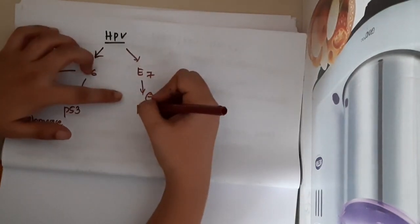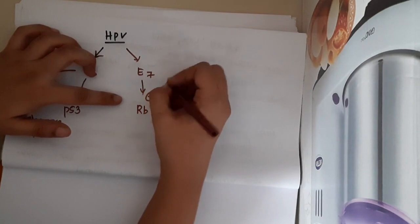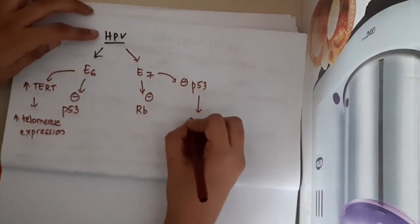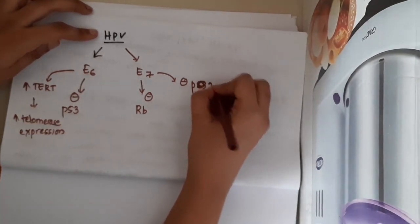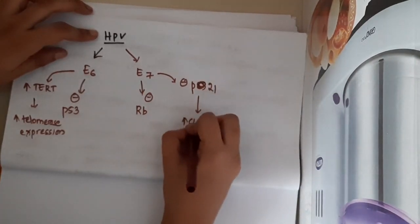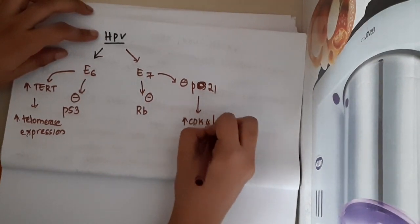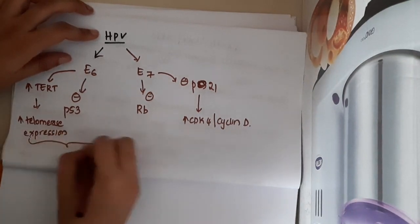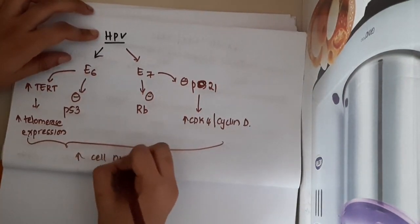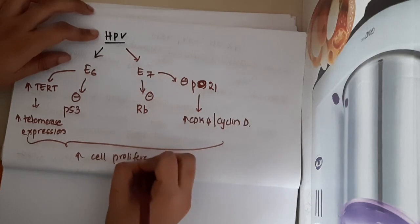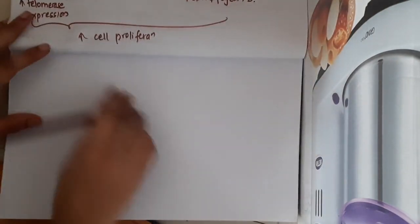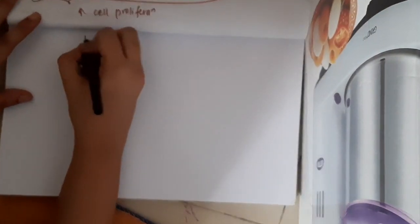E7 also inhibits p21. Because of the inhibition of p21, it increases the CDK4/cyclin D pathway, so overall there will be increased cell proliferation.